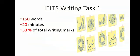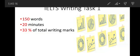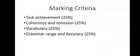Now let's turn to IELTS writing task 1. Let me introduce the main points you should pay attention to. Firstly, you should write 150 words — you can write more, however you shouldn't write less than 150. You will spend 20 minutes on this task and it will take 33% of total writing marks. There are special marking criteria: task achievement, coherence and cohesion, vocabulary, and grammar range and accuracy.